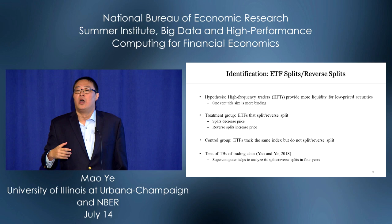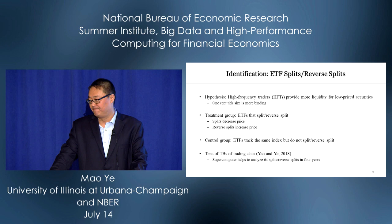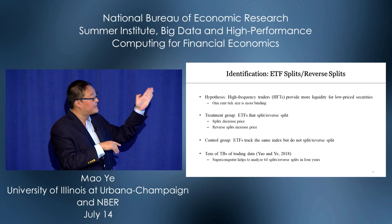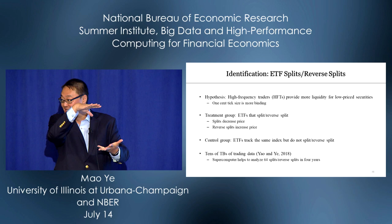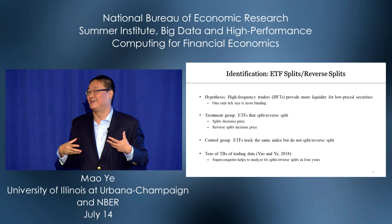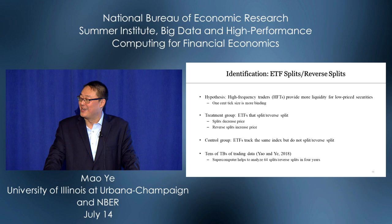Here's the hypothesis: why is there an arms race in speed? It's because of constrained price competition. Uniform tick size means HFTs are more actively providing liquidity for low-price stocks, where the tick size constraint is more binding. But for an empirical project, the first question in a seminar is always identification. People say low-price stocks are different. We finally realized we can find ETFs: two ETFs tracking the same index, where one splits and reduces its price. The unsplit ETF becomes the control group.